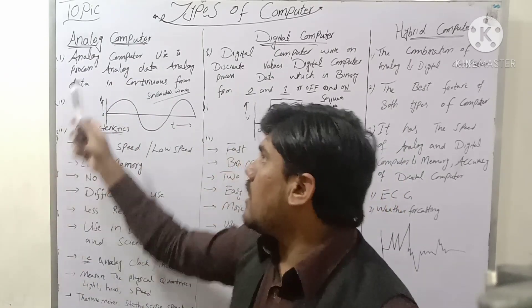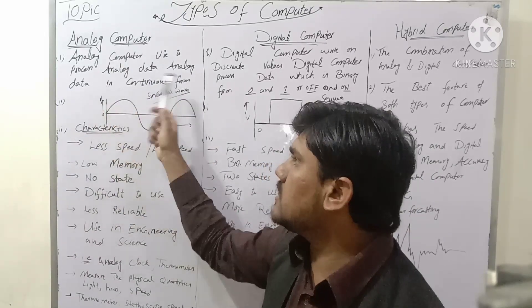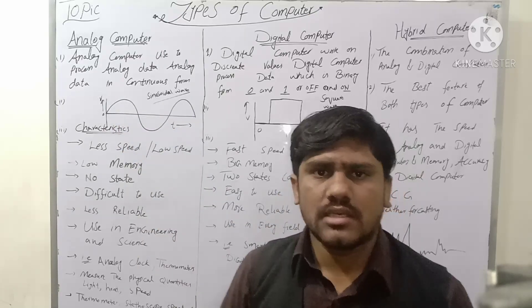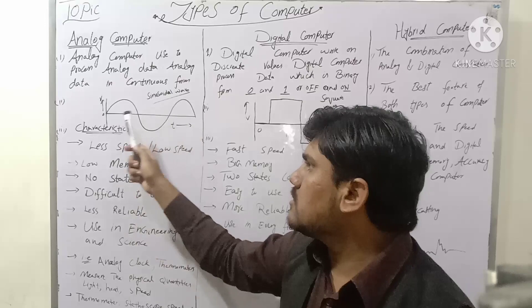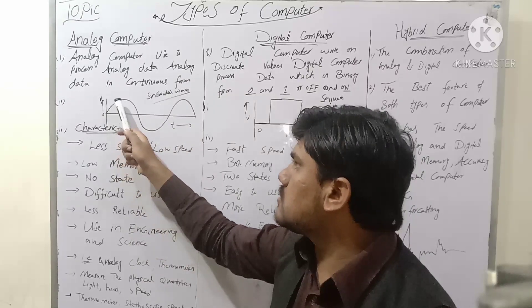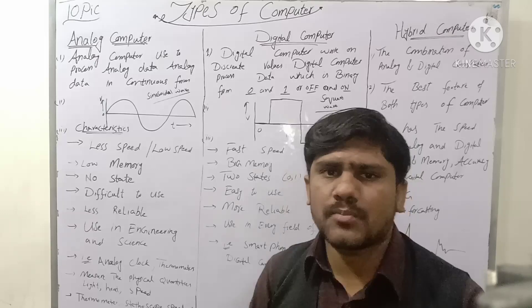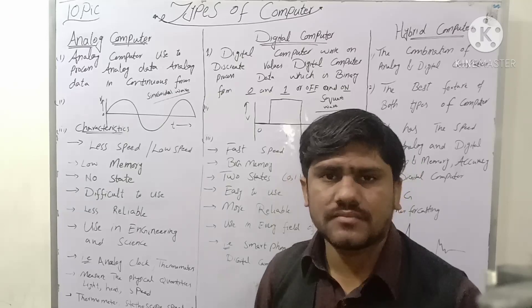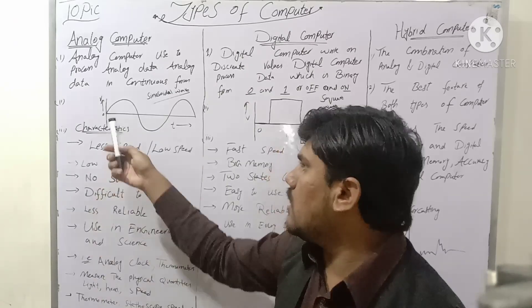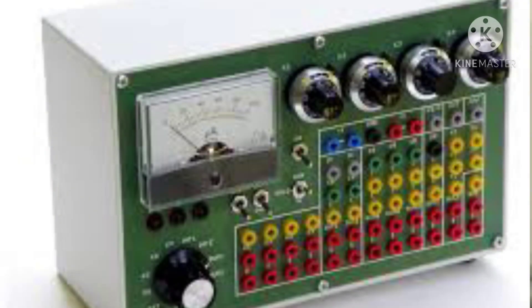Analog computers are used to process analog data. Analog data is in continuous form — continuous form means a sinusoidal wave, a sine wave. For example, if we take two values — voltage and time — and draw a graph between voltage and time, this graph produces a sine wave.